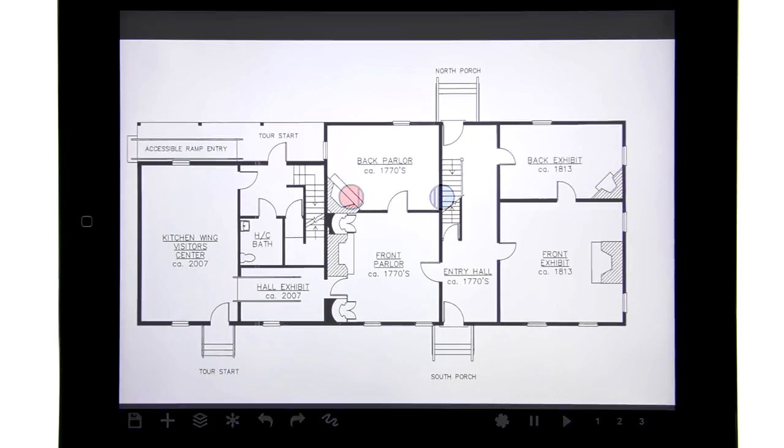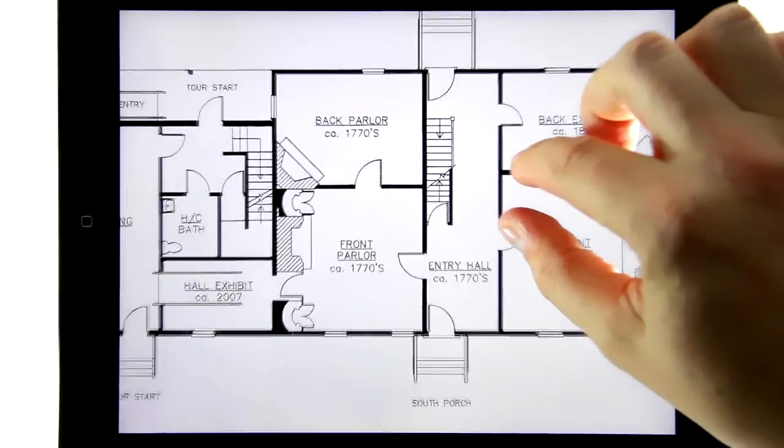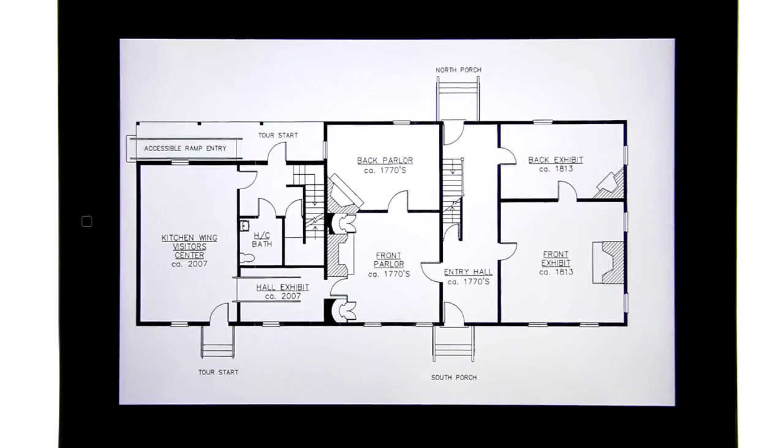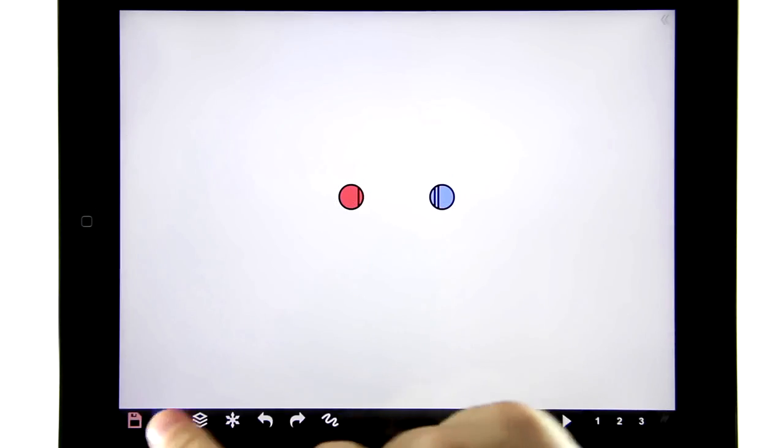Shot Designer has a built-in set designer for making floor plans, but if you already have a floor plan as a JPEG, you can just bring that in as a background. That's very simple—you just select background image right here, then you say import.